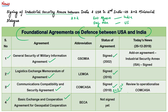ComCASA was signed in 2018 but has yet to be operationalized. In this second 2+2 dialogue, India and the USA reviewed steps being taken to operationalize this foundational agreement. The fourth foundational agreement, BECA — the Basic Exchange and Cooperation Agreement for Geospatial Cooperation — has not yet been signed between the two countries and is still under negotiation. If signed, India and the United States would have to share geospatial data such as topographical, nautical, and aeronautical data with each other.